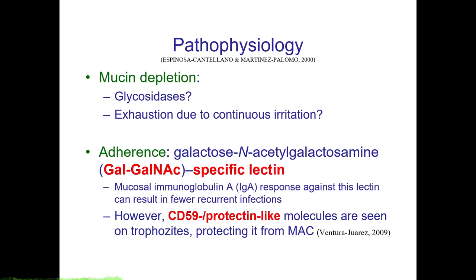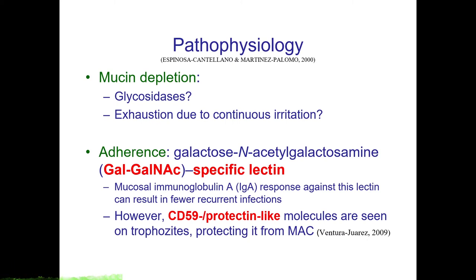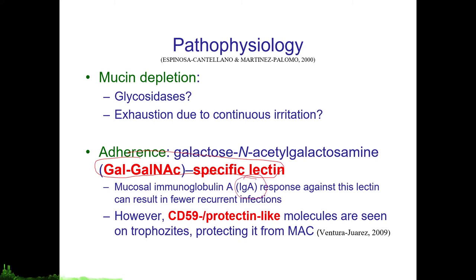Eventually, when mucin gets depleted, the first line of defense is overcome, and this leads to trophozoites adhering to naked colonic epithelial cells. This adherence is mediated by the galactose N-acetylgalactosamine-specific lectin, or Gal-GalNac-specific lectin. It has been shown that mucosal immunoglobulin A response against this specific lectin results in fewer recurrent infections. Therefore, IgA is very important in resisting amoebiasis attacks.